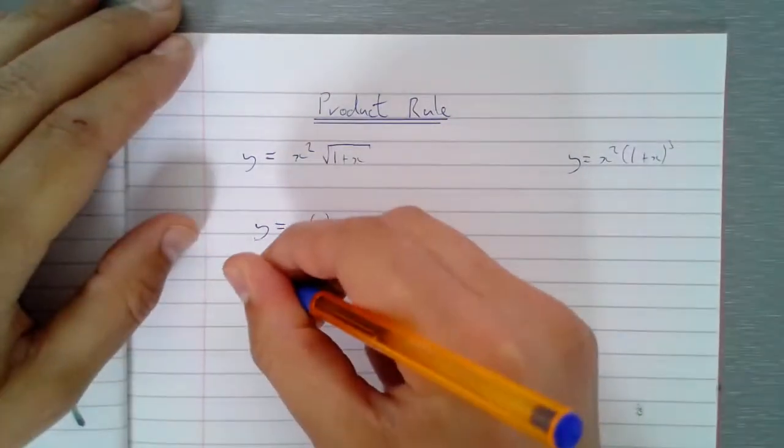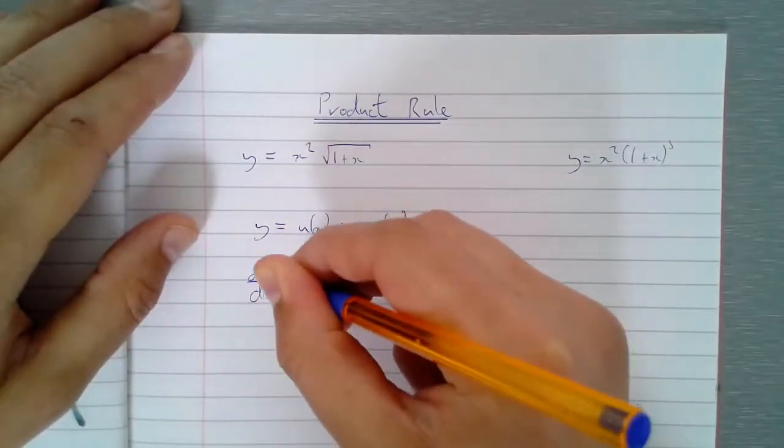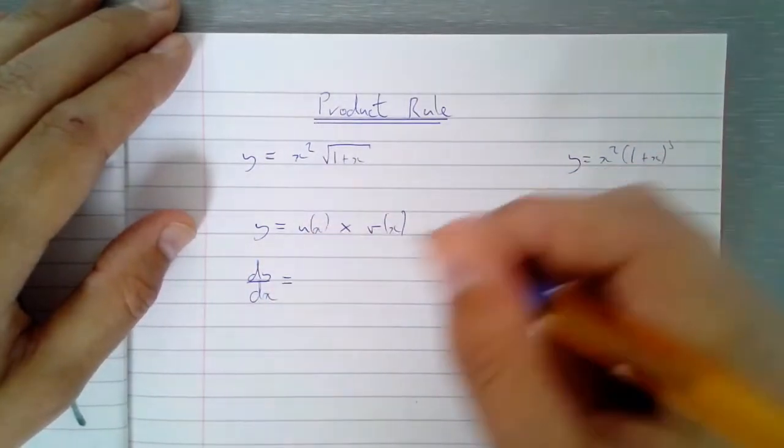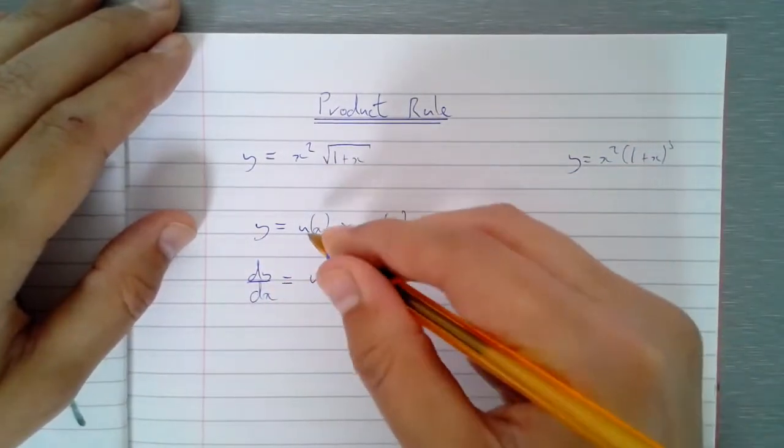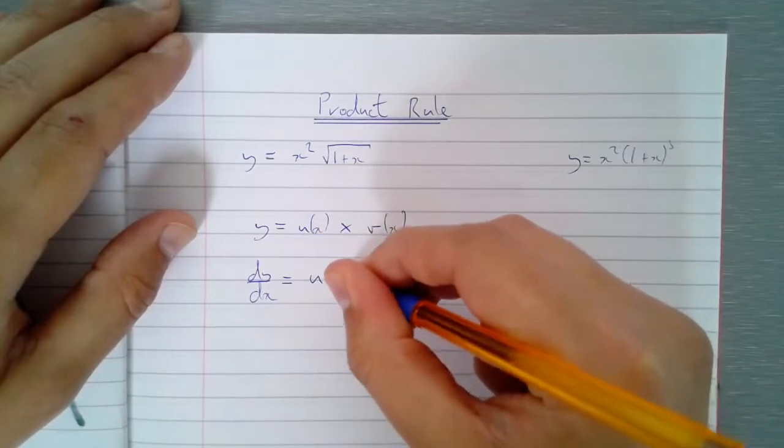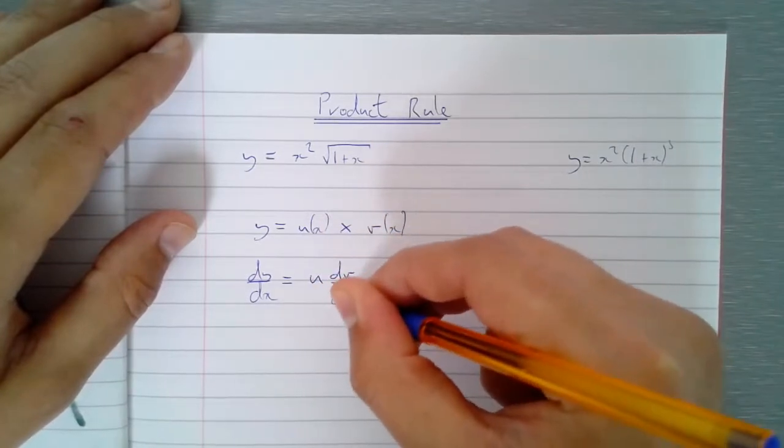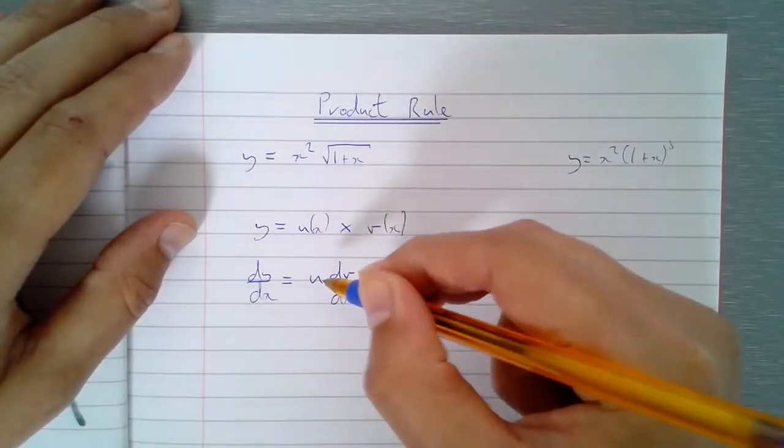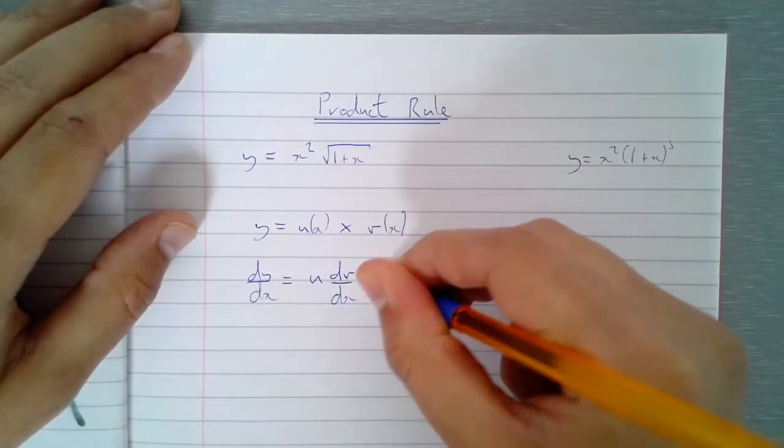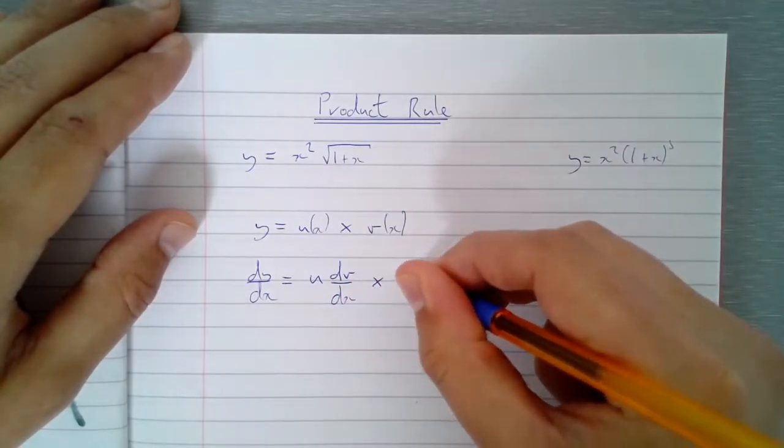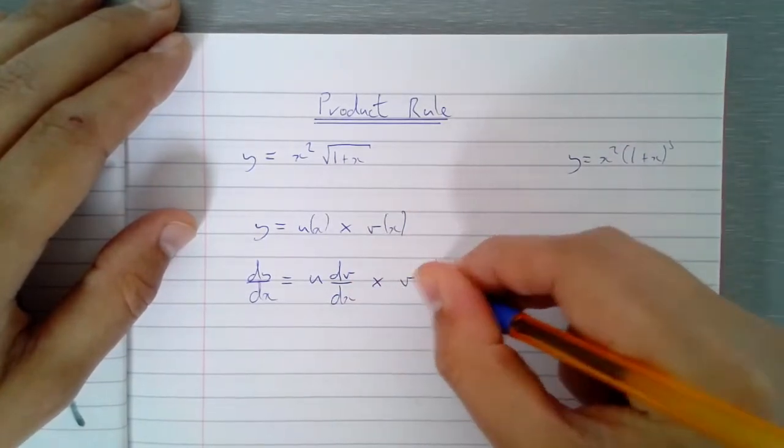Then dy/dx is whatever u is, dv/dx, and just drop the x in the bracket but otherwise it's going to get a bit messy, times v du/dx.